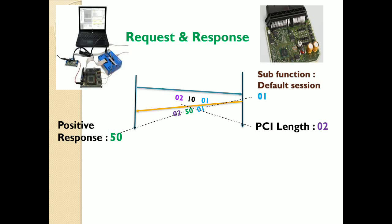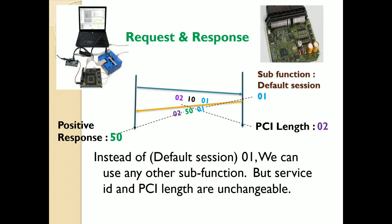The 0x02 is the PCI length — the length covering two bytes: 0x10 and 0x01. 0x10 is the service ID for Diagnostic Session Control, and 0x01 is the sub-function for Default Session. Instead of Default Session you can use any other sub-function, but the service ID and PCI length are unchangeable.